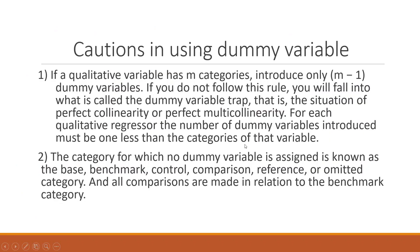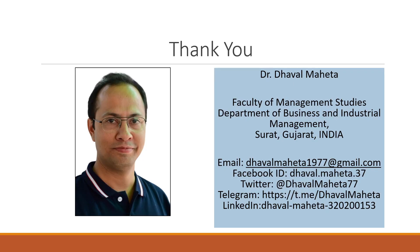There are important cautions when using dummy variable analysis. If there are M categories, you must use M minus 1 dummy variables. Failing to follow this rule leads to the dummy variable trap — a situation of perfect collinearity or perfect multicollinearity. For each qualitative regressor, the number of dummies must be one less than the number of categories. The category with no dummy assigned is the base or benchmark category, and all comparisons are made relative to it. For more videos on econometrics, kindly subscribe to the channel.